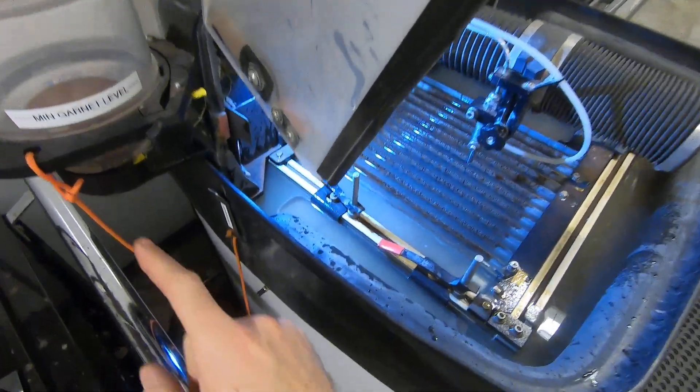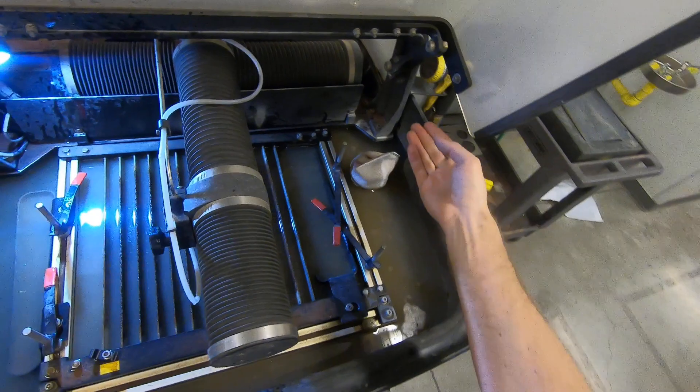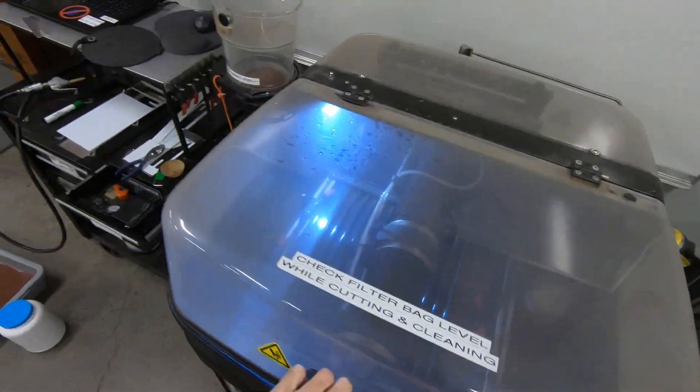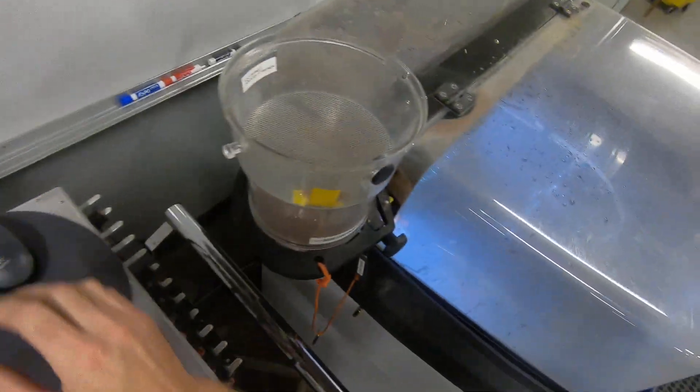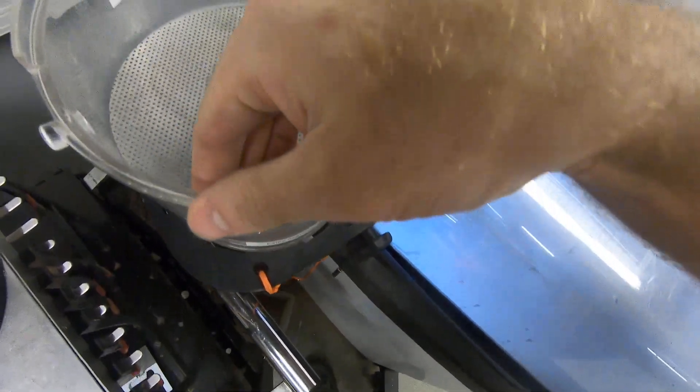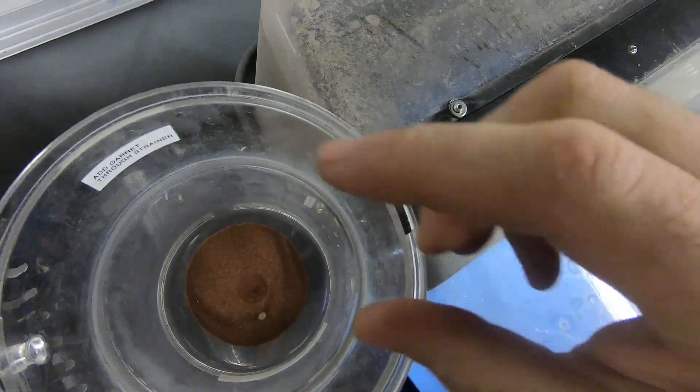And now when I run a test we should see garnet flowing from the hopper through the nozzle. Test. That indicates that we have garnet flow.